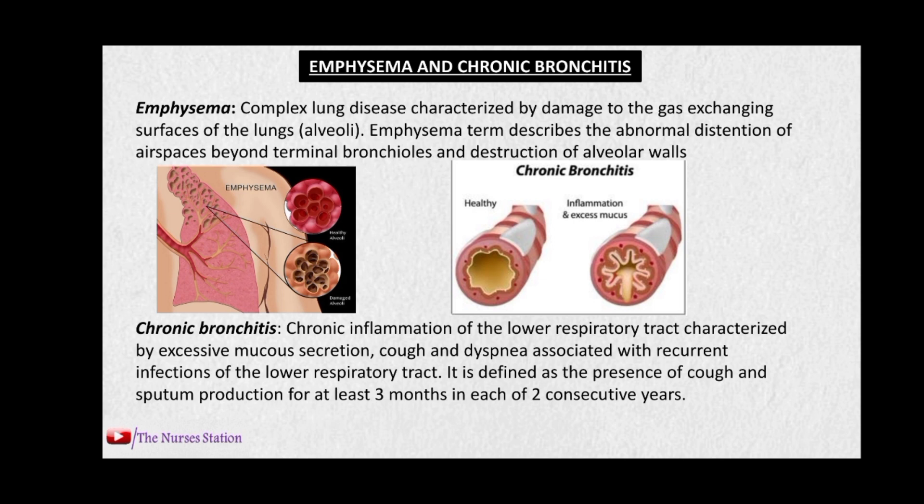COPD includes emphysema and chronic bronchitis. In emphysema, there is destruction and damage of the gas-exchanging surface of the lungs called the alveoli. There is distension of the air spaces beyond the terminal bronchioles and destruction of alveolar walls, which leads to decreased gaseous exchange between the lungs and the blood.